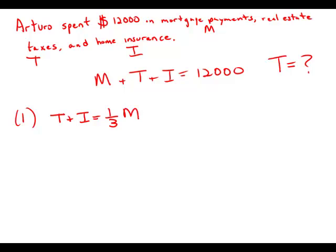This is interesting because we could glom T plus I together as a single thing. Let's call that K. So K equals one third M. And then in the equation that we're given, we can combine the T plus I. So then we get M plus K equals 12,000.